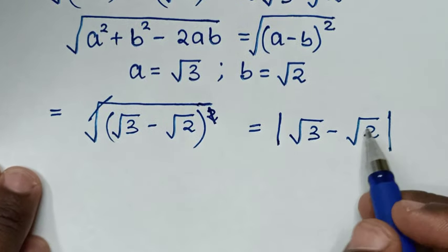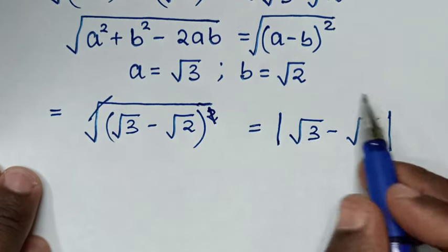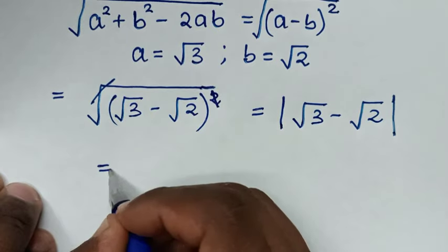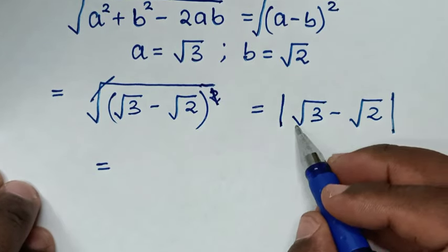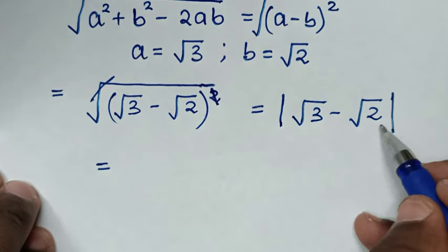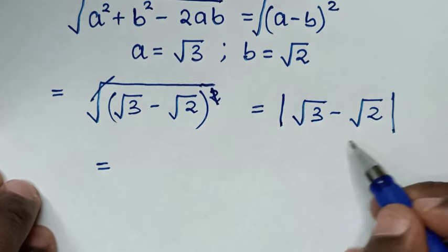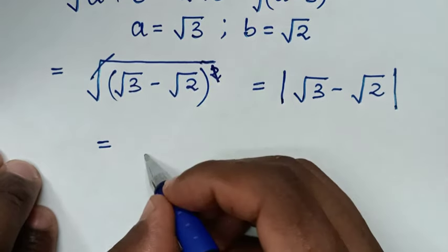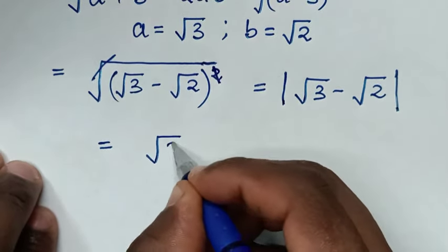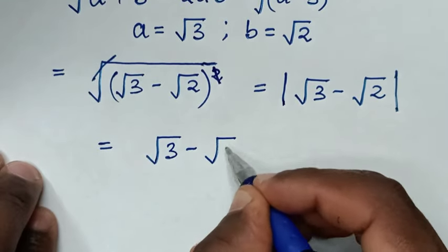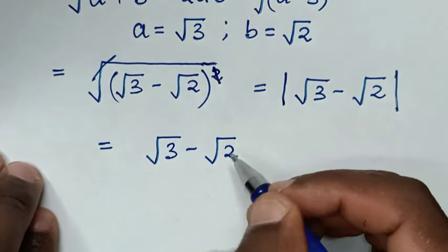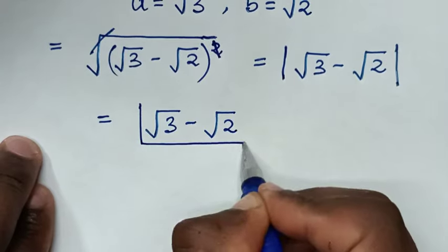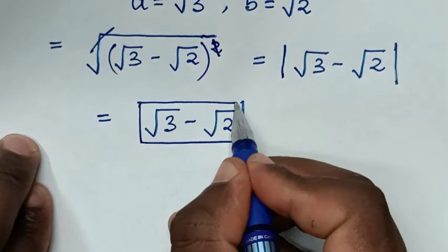So it is equal to √3 minus √2, which is a positive value. Therefore, the simplified form of this problem is √3 − √2.